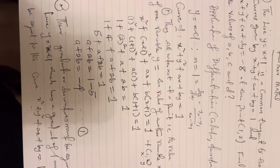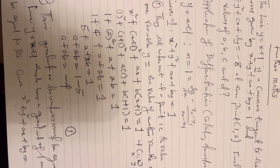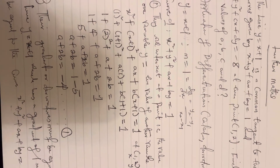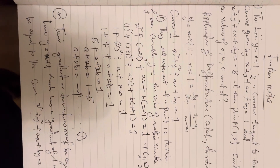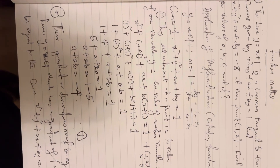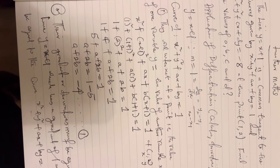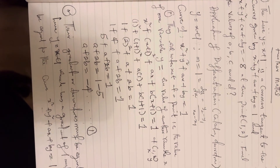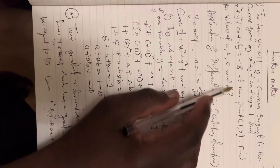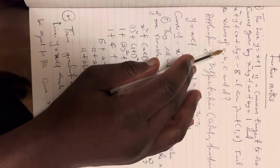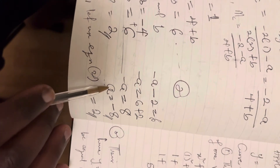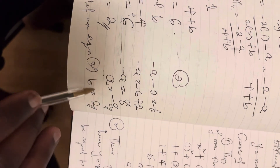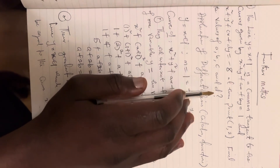Hello everyone. This is the concluding part of the solution on the application of calculus. We started last time and succeeded in finding a and b. We found a is equal to minus 8 and b is equal to 2. Now I want to find c and d.